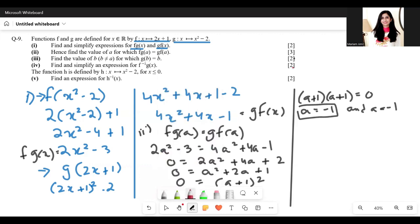Next up is part 3, which is find the value of b where b and a are not equal and f(g(b)) equals b. Now g(b) would be b squared minus 2 equals b. This gets us the quadratic equation b squared minus b minus 2 equals 0.